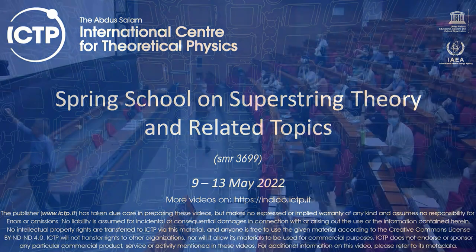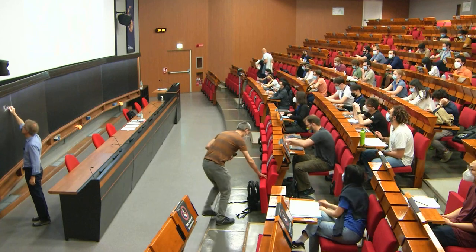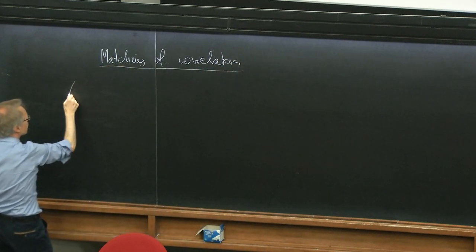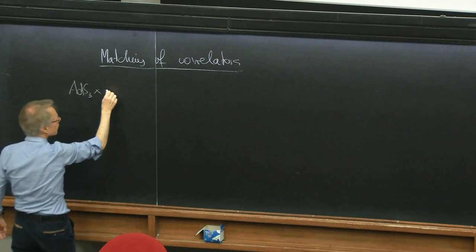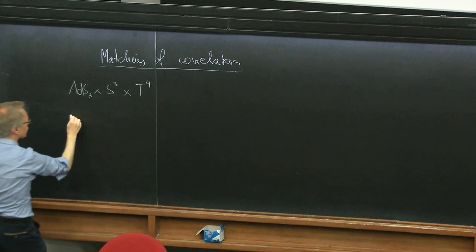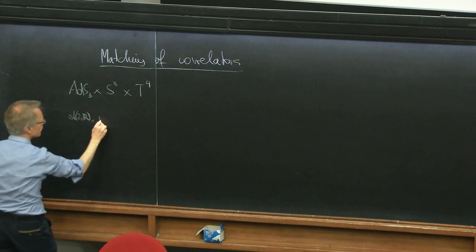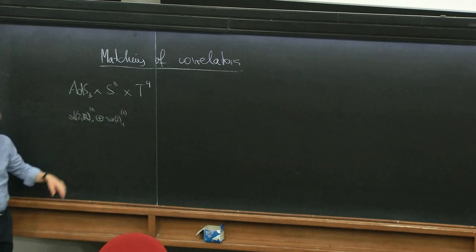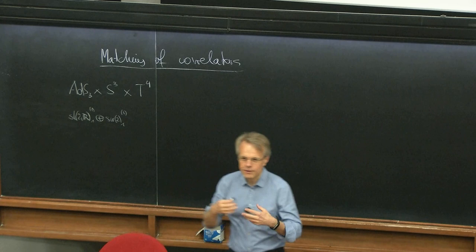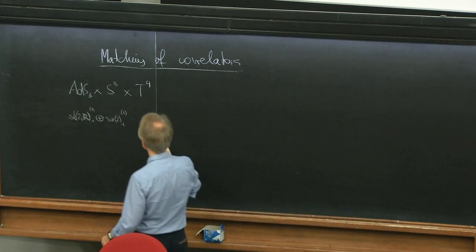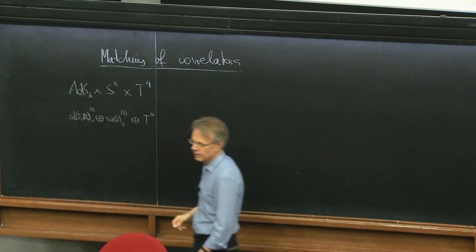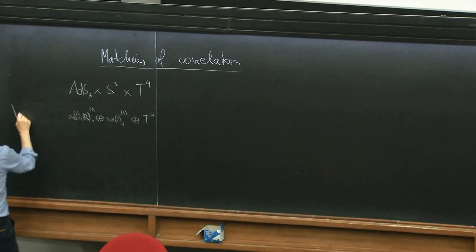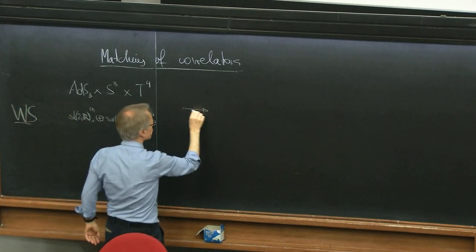Today we want to understand how the correlators match between the two descriptions. We have on one side string theory on AdS3 × S3 × T4, described in terms of an SL(2,R) Wess-Zumino-Witten model at level 1 plus an N=1 version, written in the NSR formalism. The hybrid formalism didn't reach enormous enthusiasm, so let's stick with this — you can understand it in either description. This string theory is dual to the symmetric orbifold of T4.